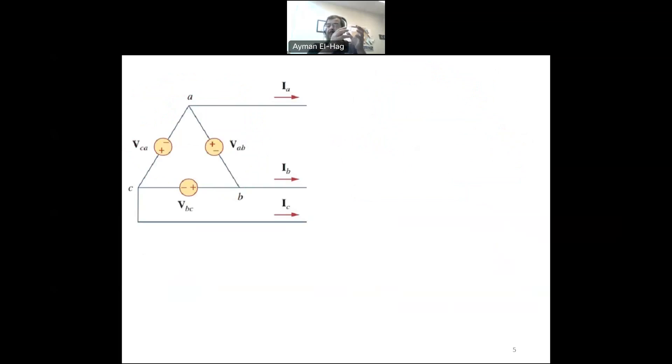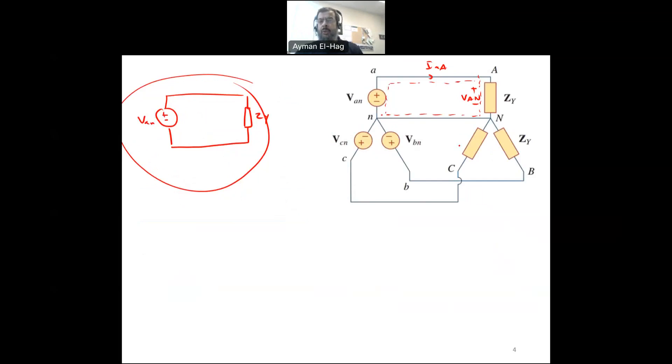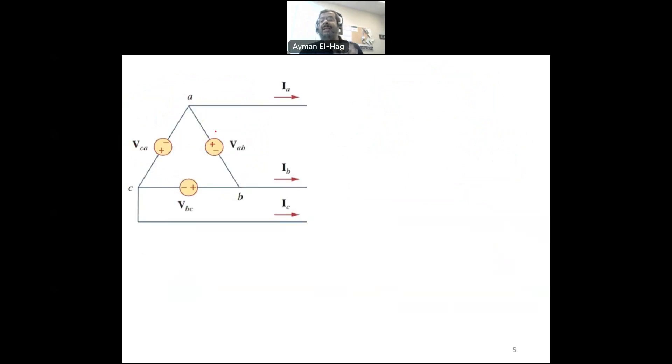Now, if the source is basically a Delta connection, then I cannot isolate a single phase now because there is no neutral. This common point between the load and the source, this neutral, doesn't exist. So what we need to do is convert the source into a Y-connection. So basically here, I will have a virtual, not real, but a virtual Y-connection source. And this will be your VAN, VBN, and VCN.